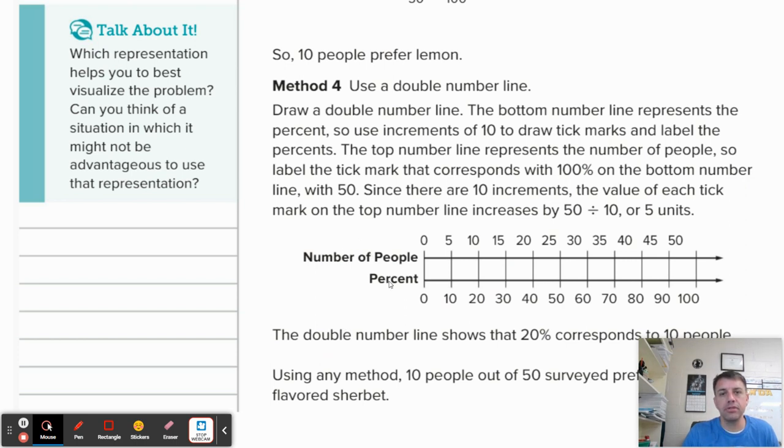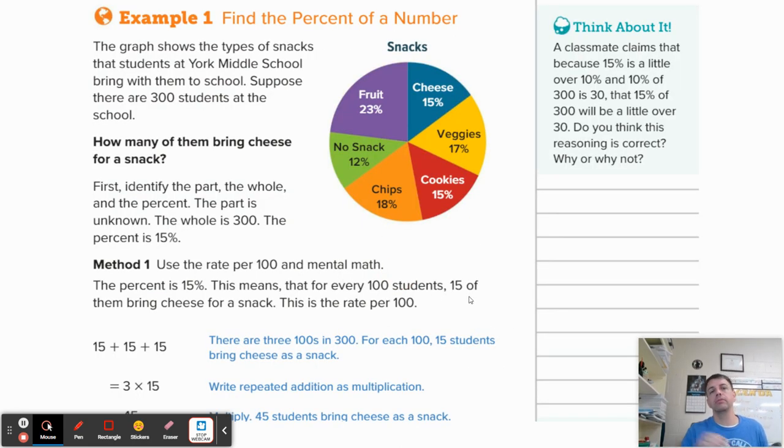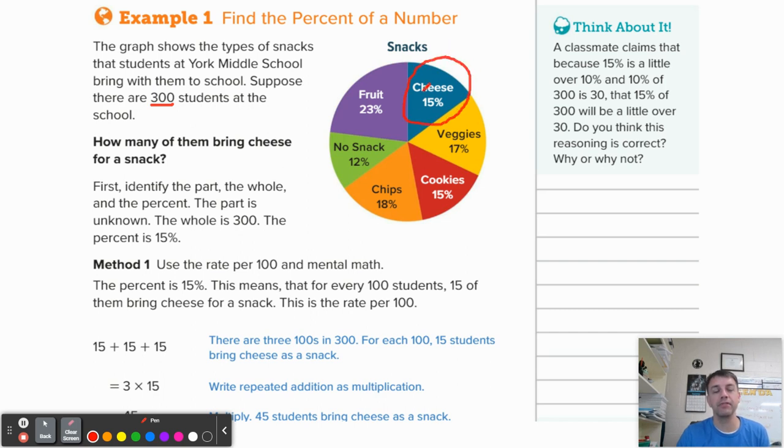So let's move on. Here's another method you could use. Again, I think the ratio example is a lot easier. Let's look at this example, example number one. So the graph shows the types of snacks that students at York middle school bring with them to school. Now, suppose there are 300 students at the middle school. How many of them bring cheese for a snack? Well, right here, we have 15% of students choose to bring cheese as a snack. Now, the question here is out of the 300 students, how many would 15% equal to? Well, you have a couple of different options with this one. This is unique in that there are exactly 300 students. That almost never happens.